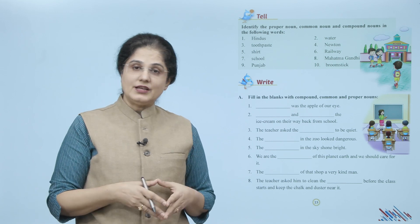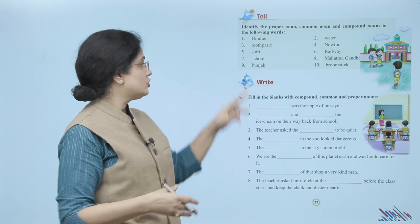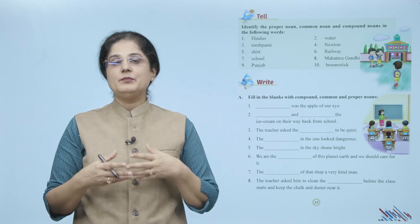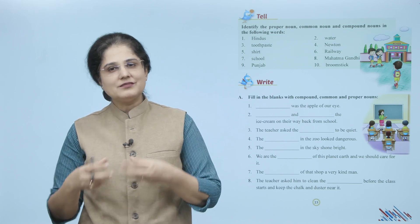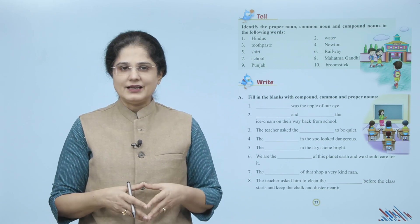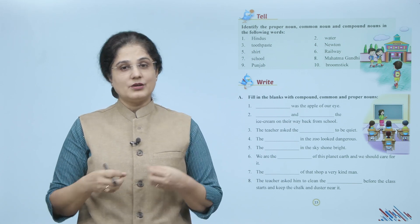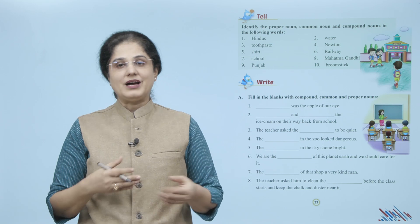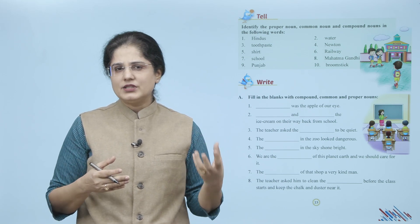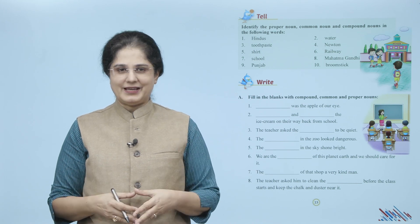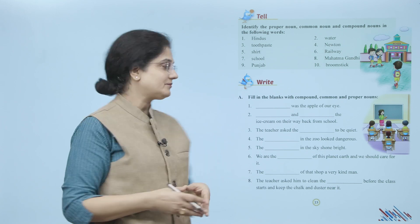Identify the proper noun, common noun and compound noun in the following words. Yeh jo aapko words diye gaye hain, in mein identify kariye ki kaunsa proper noun hai, kaunsa common noun hai, aur kaunsa compound noun hai. Words kya hain? Hindus, water, toothpaste, Newton, shirt, railway, school, Mahatma Gandhi, Punjab, broomstick. Ab isme agar hum word dekhen — Hindus — to yeh kya hai? Yeh proper noun hai. Isi tarah se aap baaki nouns ko identify karein.